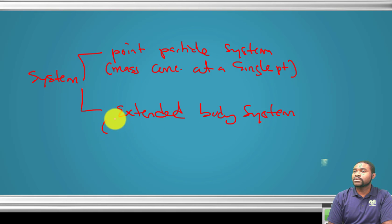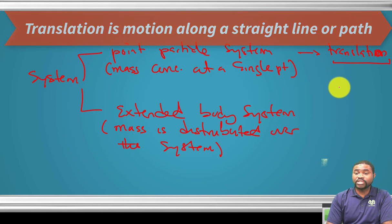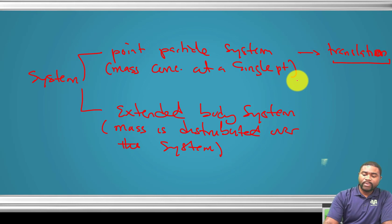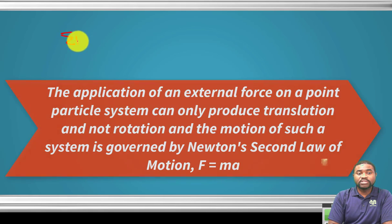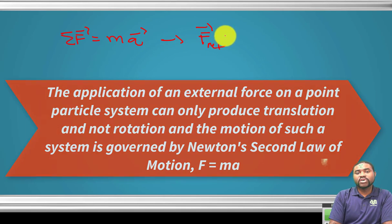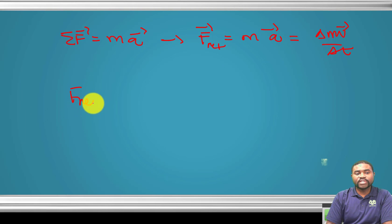A point particle system can only undergo translation. Translation describes motion in a straight line. The application of a force on a point particle system will produce only translation, and the motion of such a particle is governed by F = ma, where F net equals the mass of the system times its acceleration, which equals m times dv/dt, or the change in momentum over the change in time.